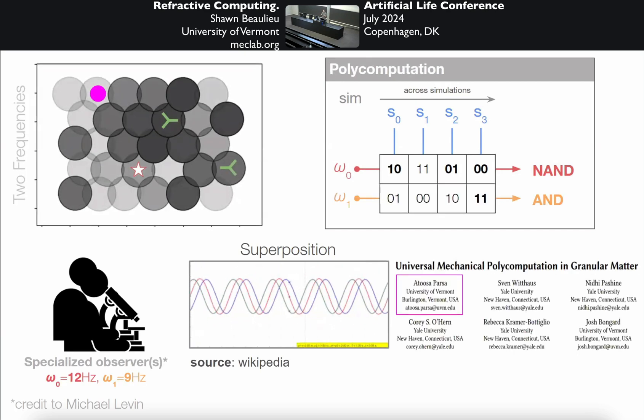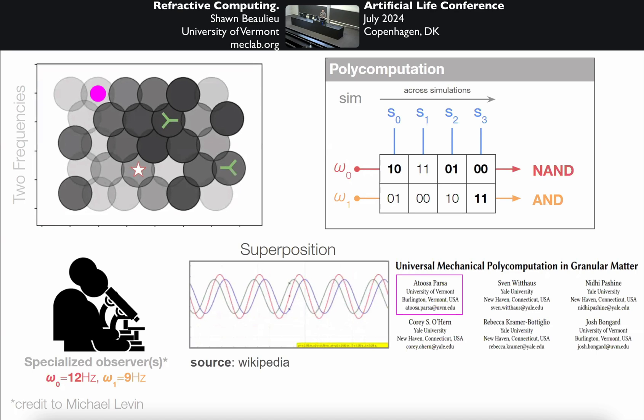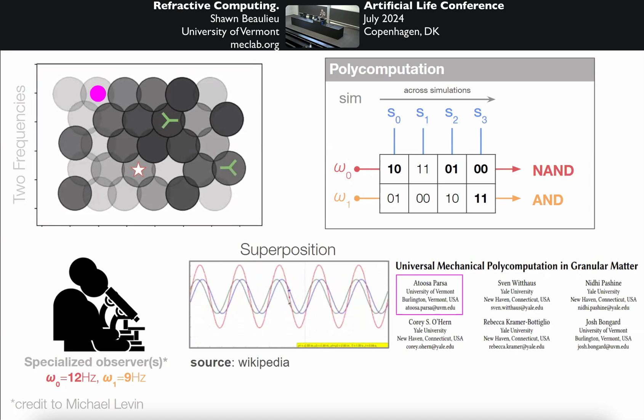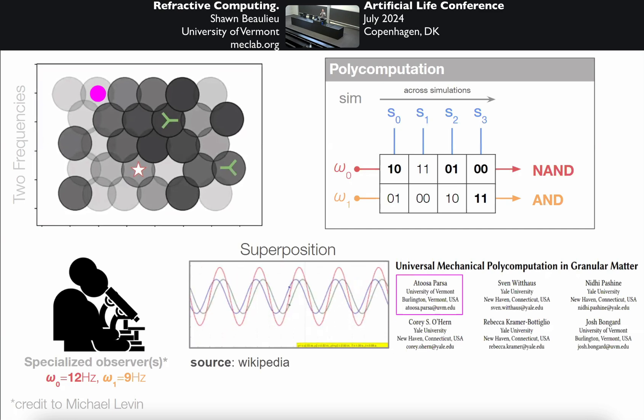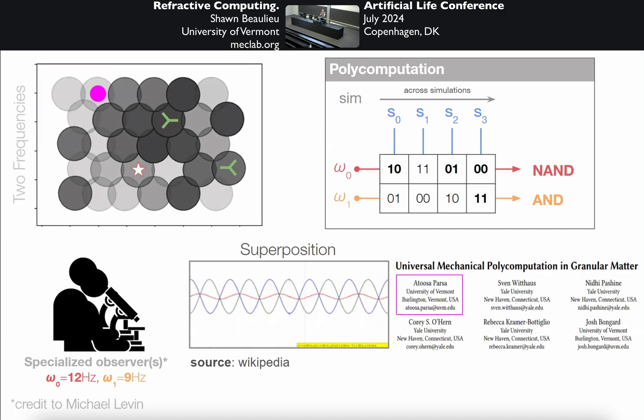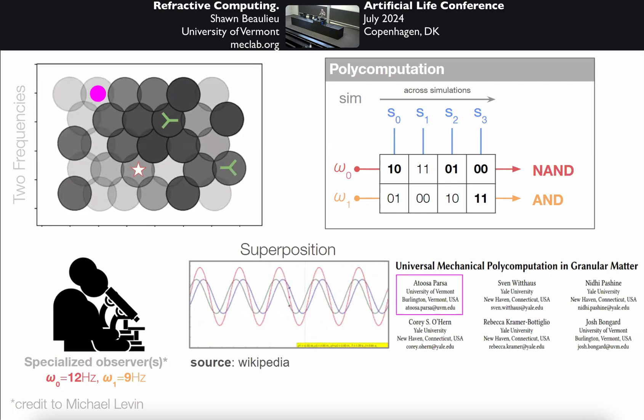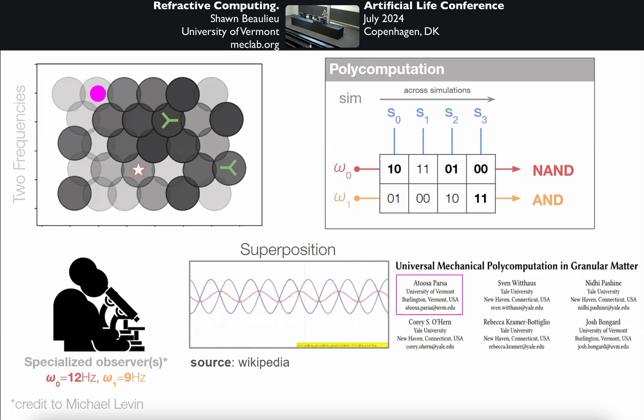That's exactly what our group did in another paper demonstrating the existence of so-called polycomputational materials. These are materials that compute multiple things with the same parts at the same time. This is possible because of superposition and Fourier transform. You can isolate any arbitrary frequency and then ask evolution to optimize for behavior at that frequency. You can also think of this as being equivalent to having two specialized observers, one that looks at this sheet of particles and only has eyes for what happens at 12 hertz, and they say this material is computing NAND. And then another observer who only has eyes for what happens at 9 hertz, they look at the same material and they say, no, no, you're crazy. It doesn't compute NAND, it computes AND. And then we, the external observers, say yes to both of them. It does both things. It's a polycomputational material.